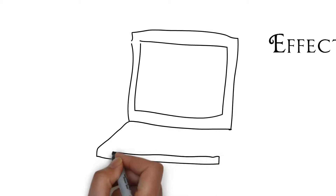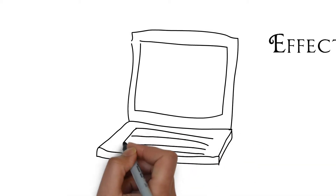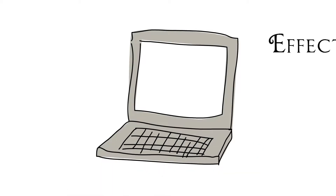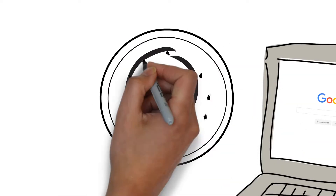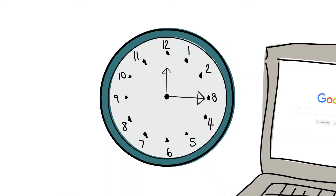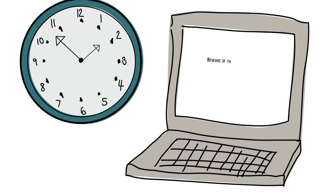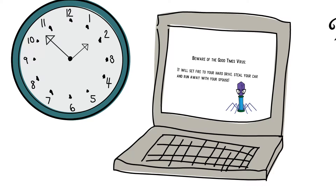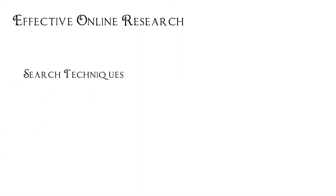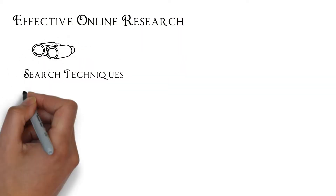Effective Online Research. Finding information on the web can be straightforward, thanks to powerful and intelligent search engines. However, on many occasions, users have trouble finding the information they need, or spend an excessive amount of time looking for it. To make matters worse, the web is full of unreliable information. Here are some searching techniques that can assist you.